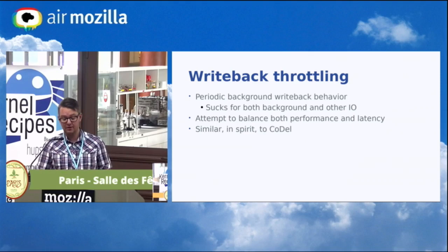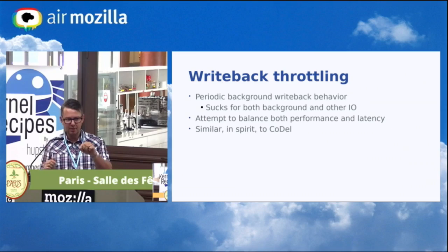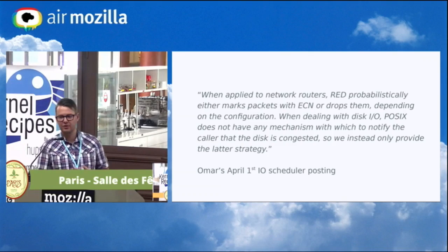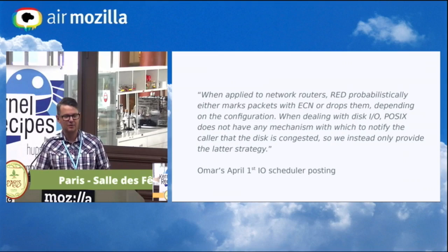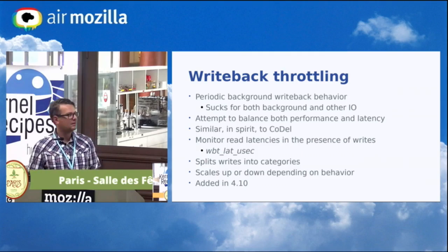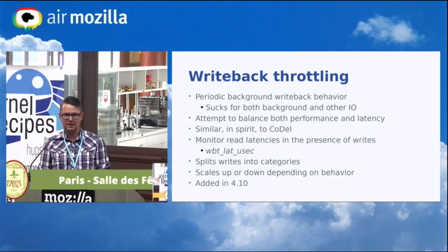Writeback throttling was inspired by CoDel, the network scheduling algorithm, which monitors packet completion times over a window of time and drops packets if the minimum observed latency exceeds a certain value. This is interesting for IO scheduling — there was actually an April 1st announcement of a new MQ scheduler where the main insight was that since we don't have ECN or congestion marking on this side, we can simply drop writes for great performance. But that doesn't work well for disk writes: on networking you can rely on retransmit, but if you drop writes on the floor users get very unhappy.